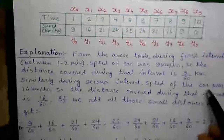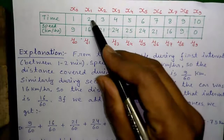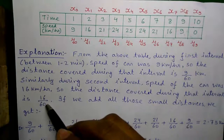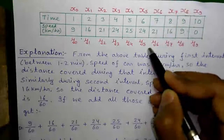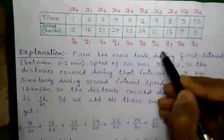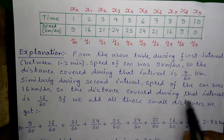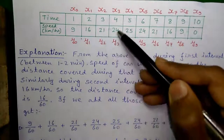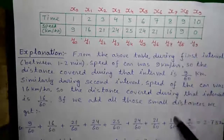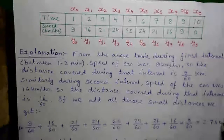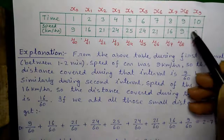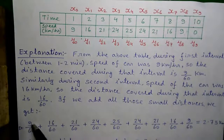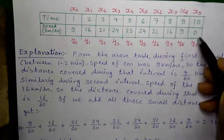Similarly, during the second interval — between 2 and 3 minutes — speed of the car was 16 km per hour. So the distance covered during that interval is 16 by 60 km, because in 60 minutes it covers 16 km, so in 1 minute it covers 16 by 60 km. So if we add all those small distances, we get distance D equals 9/60 plus 16/60 plus 21/60 plus 24/60 and so on, up to 9/60, equals 2.75 km. Notice we are not taking the last value, because there are 9 intervals and thus 9 values — 1 through 9 — except the last sample.